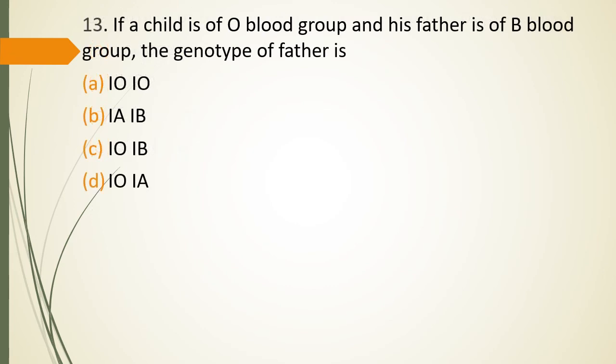Question 13. If a child is of O blood group and his father is of B blood group. The genotype of father is IOIO, IAIB, IOIB or IOIA. Child is of O blood group and father is of B blood group. The genotype of father is? The correct answer is Option C, IOIB.